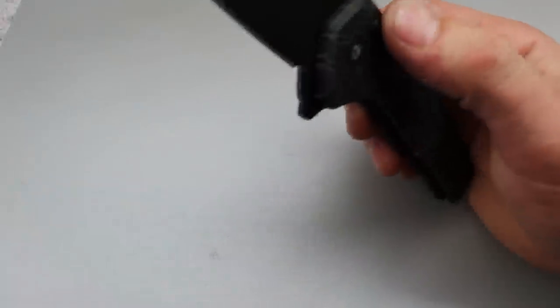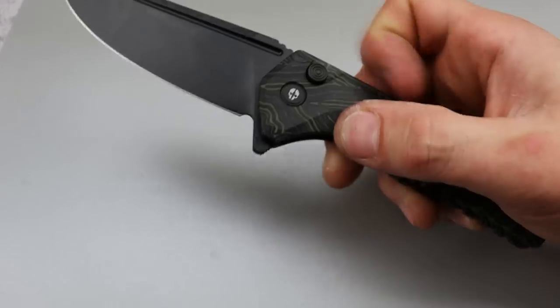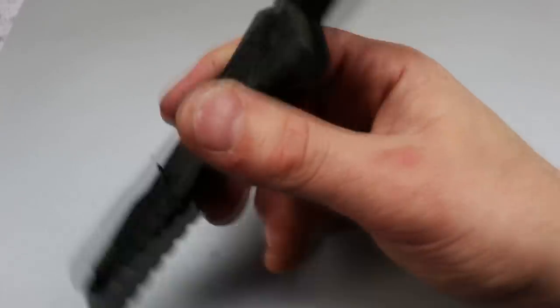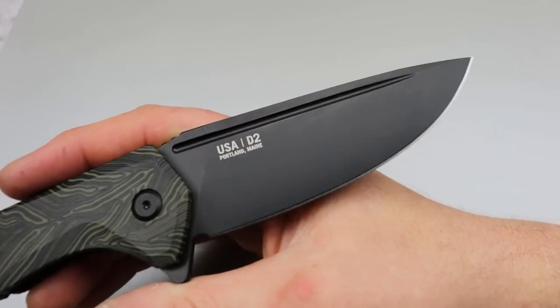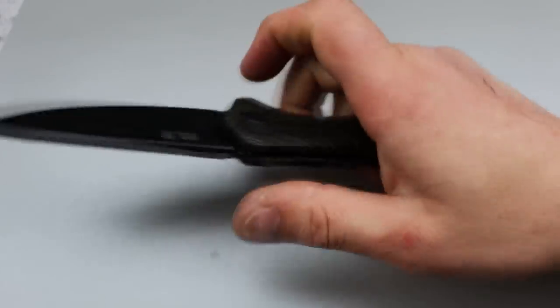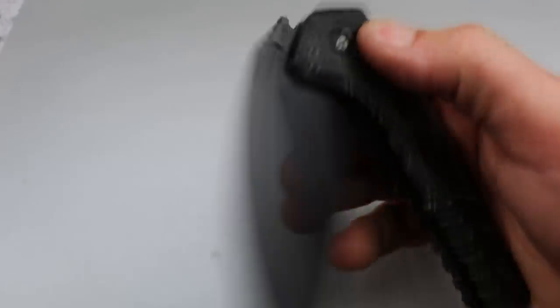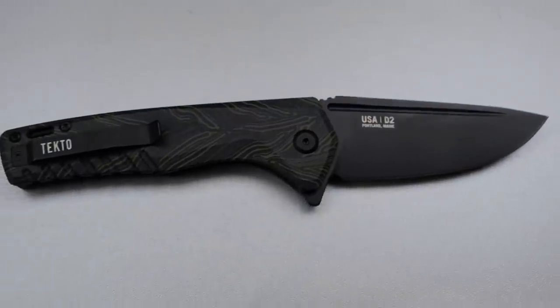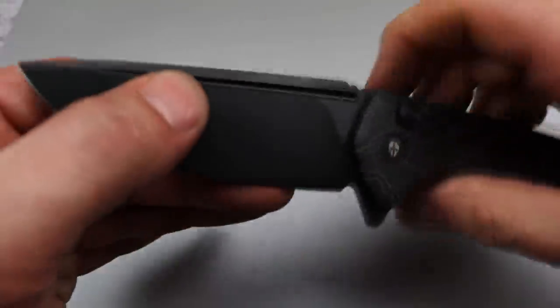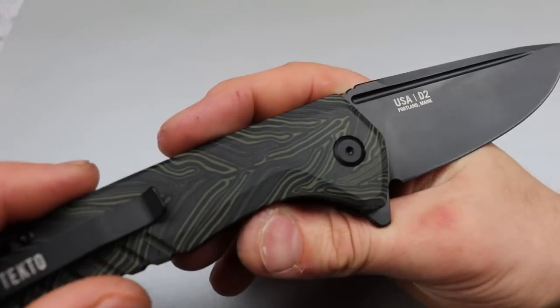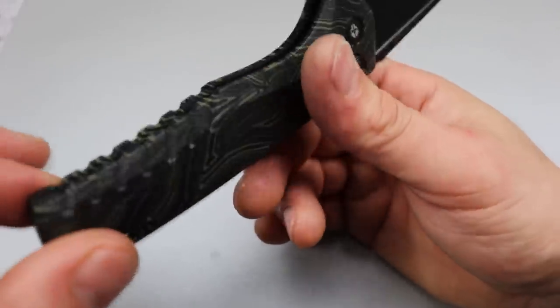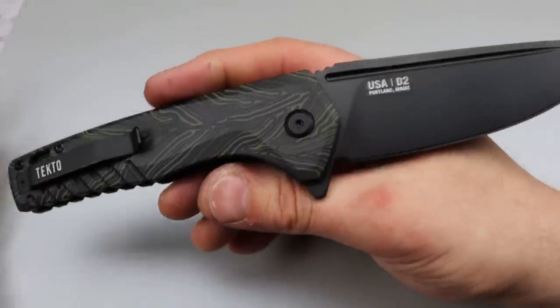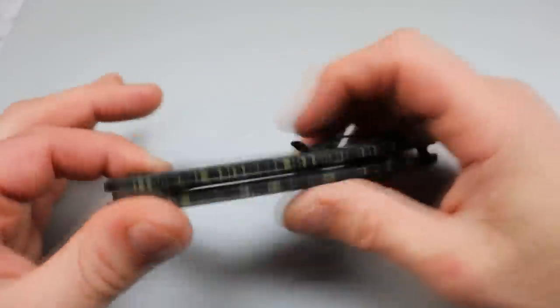Now, the next one is the Tecto Knives F3 Charlie. This one is only assembled in the USA. So let me be clear. The parts are made overseas. This is the only one in this video that's going to be like that. So it is not 100% USA made, but it is assembled in the USA. And it's really good. This is a great way to get something built in the USA for a good value.